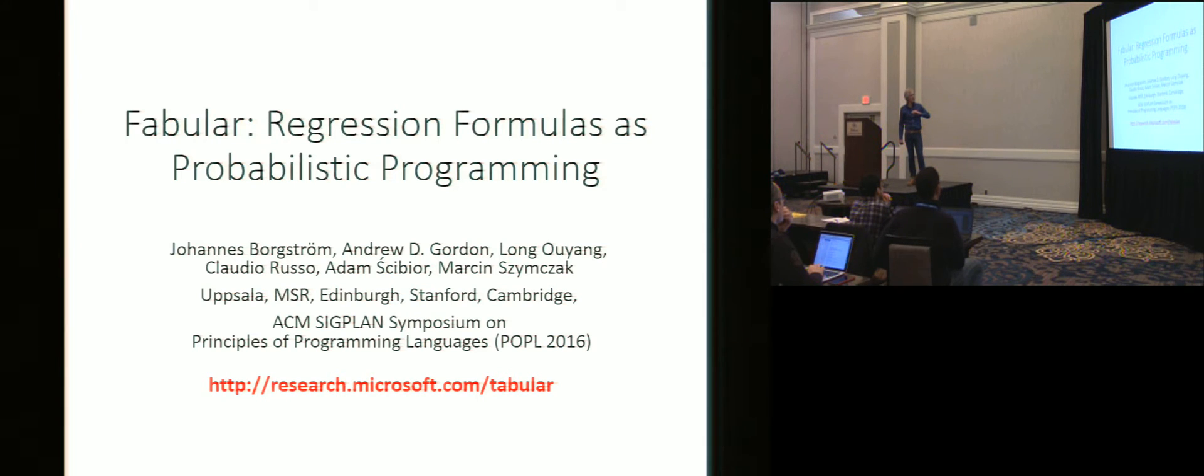Myself, Long Ouyang. Long is from Stanford, Jobo is from Uppsala, Claudio is from Emistar, Adam is from Cambridge, and Marcin is from Edinburgh, and I'm from Microsoft and Edinburgh. So what is this about? It's about regression.